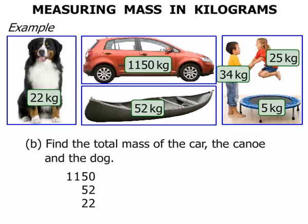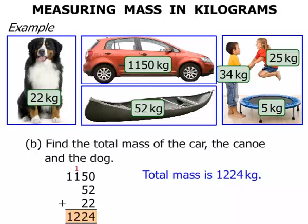Make sure when we add these up, we line them up correctly. From the ones or units column: 0 plus 2 plus 2 is 4. Our next column: 5 and 5 is 10, plus 2 more is 12 — so we put the 2 down and carry the 1. Then 1 plus 1 is 2, and we're only left with 1. So the total mass is 1,224 kilograms.